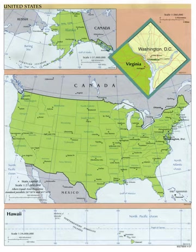The insular areas of the United States are those U.S. territories that are neither a part of one of the fifty states nor the federal district. They are classified by whether they are incorporated—part of the United States proper—and whether they have an organized government through an organic act passed by the U.S. Congress. Insular areas are administered by the Department of the Interior's Office of Insular Affairs. Since the creation in 1787 of the first territory beyond the existing states, the Northwest Territory, the federal government has established numerous organized incorporated territories, with some political autonomy.